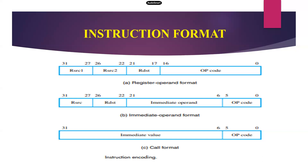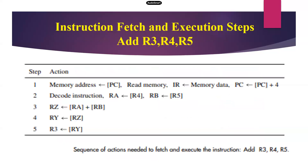The last one is the J format, or call format, which is for unconditional control statements. Out of 32-bit, the first 0 to 5 bits are called opcode, and the next bits from 6 to 31 are called the immediate value — here the target address is specified in that immediate value. So those are the three formats: R format, I format, and J format.